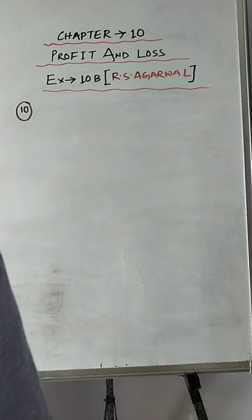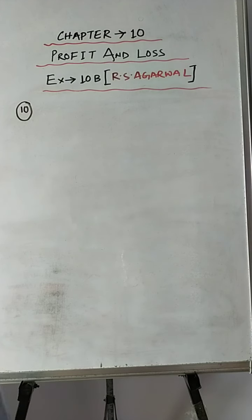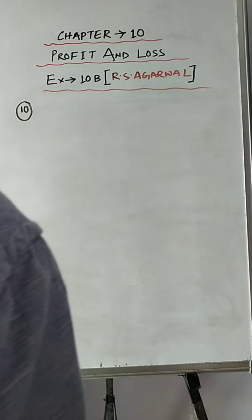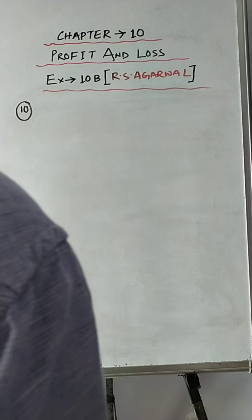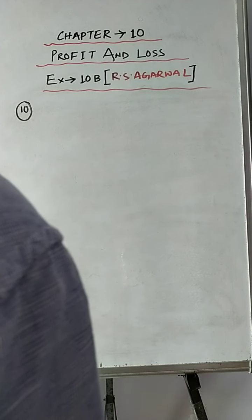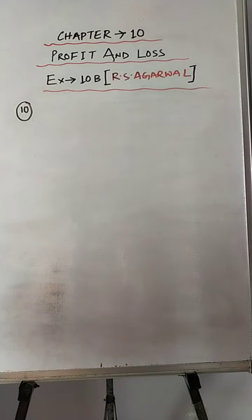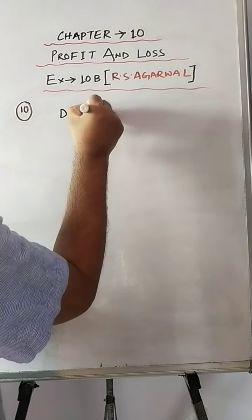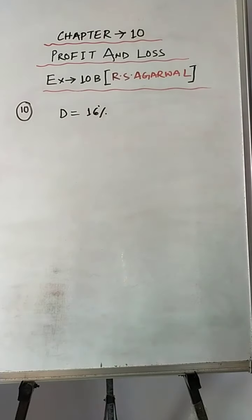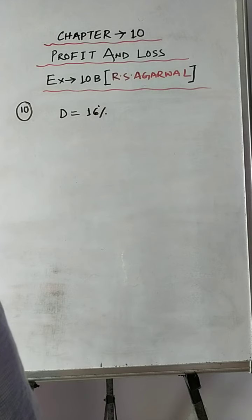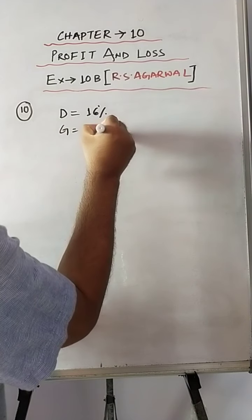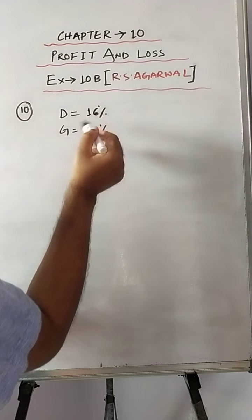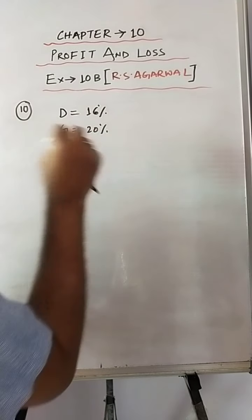So in question number 10, a jeweller allows a discount of 16%. First of all, you always have to see what data is given in the question and what you have to find out. So a jeweller allows a discount of 16% — discount percent is given, that is 16% — and still gains 20%. After allowing a discount of 16%, the jeweller is still gaining 20%.